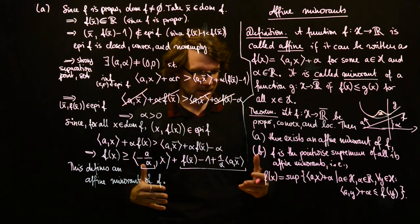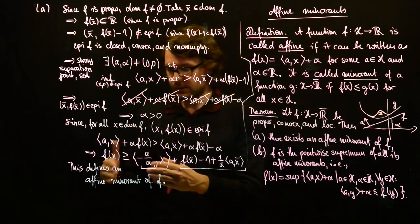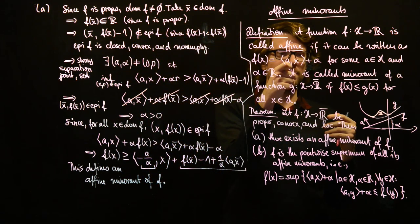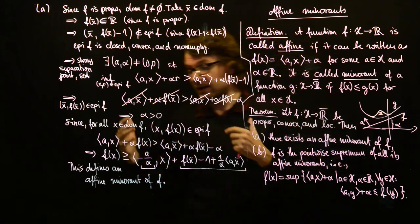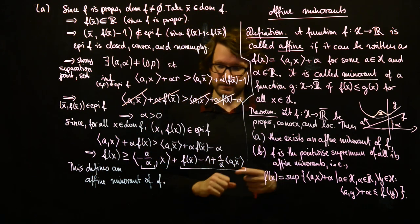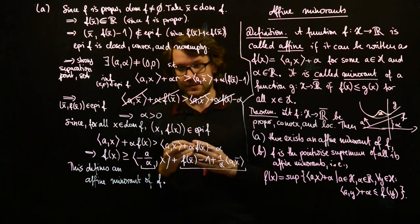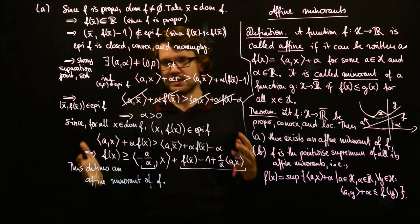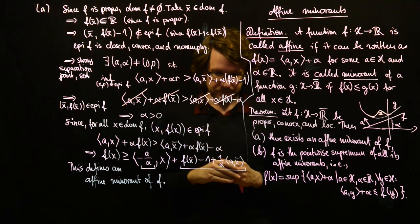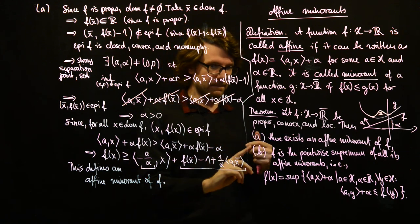We have seen how to employ the separation theorem to construct an affine minorant — finding a vector a and scalar α such that we have an affine minorant. In a similar way, one can derive other relations expressible via separation of two convex sets. In the next video, we will prove part (b).